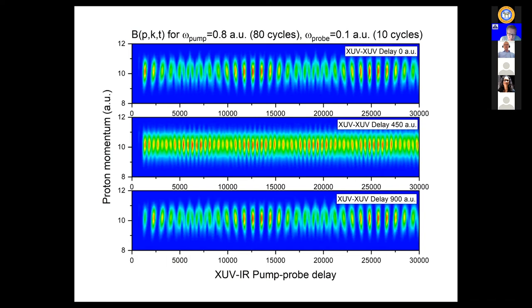For a delay of zero atomic units — a single isolated attosecond pulse — we see vibrational wave packet motion very similar to the experimental results, with dephasing and rephasing. The same is true for the 900 atomic unit delay. However, at 450 atomic units (~10 femtoseconds), we don't really see the fundamental vibrational frequency anymore — only some high-frequency oscillations, much less pronounced. I will argue this is a result of photoelectron-ion entanglement preventing the emergence of pronounced ionic vibrational coherence.